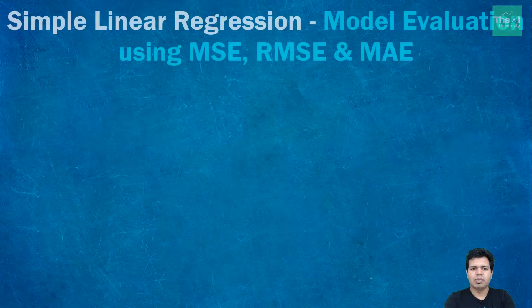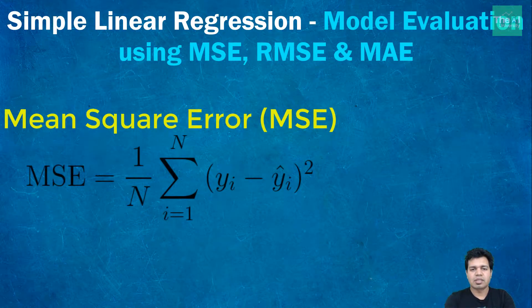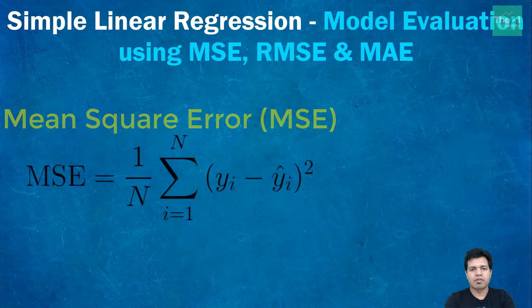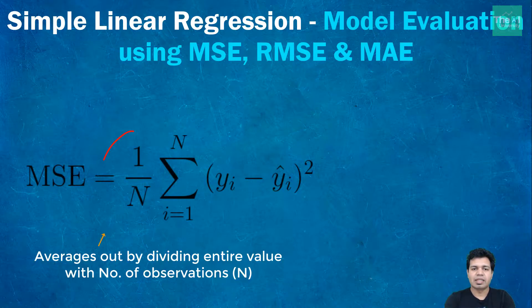Let me start with mean square error or MSE. Mean square error is a technique which measures average square error of our machine learning predictions. For each of the observation, it actually calculates the sum of square of difference between actual and predicted values and then it averages out these values. The squaring is necessary in order to remove any negative signs.